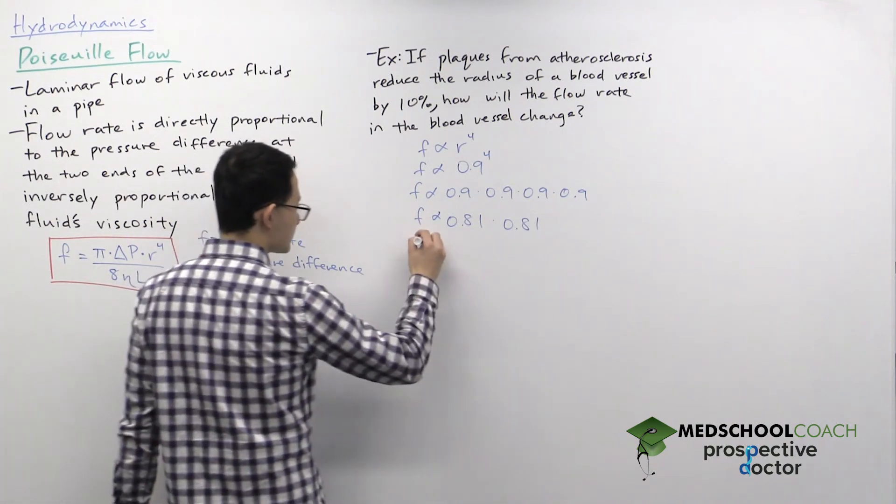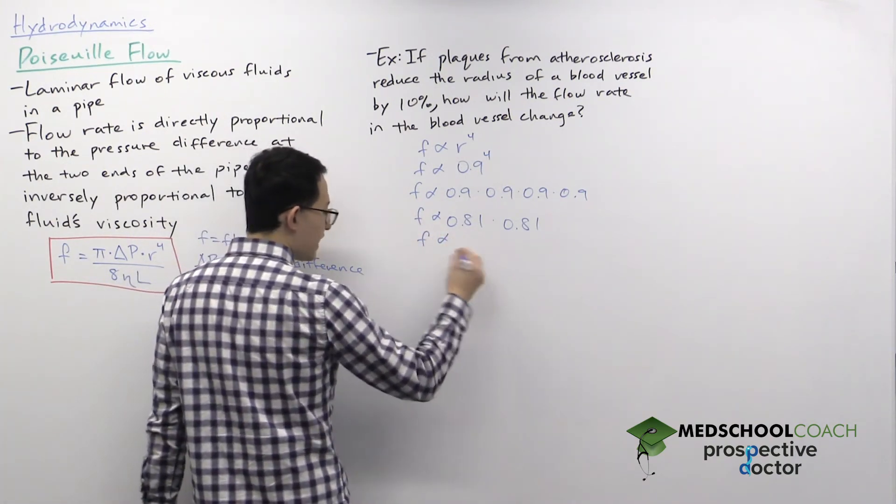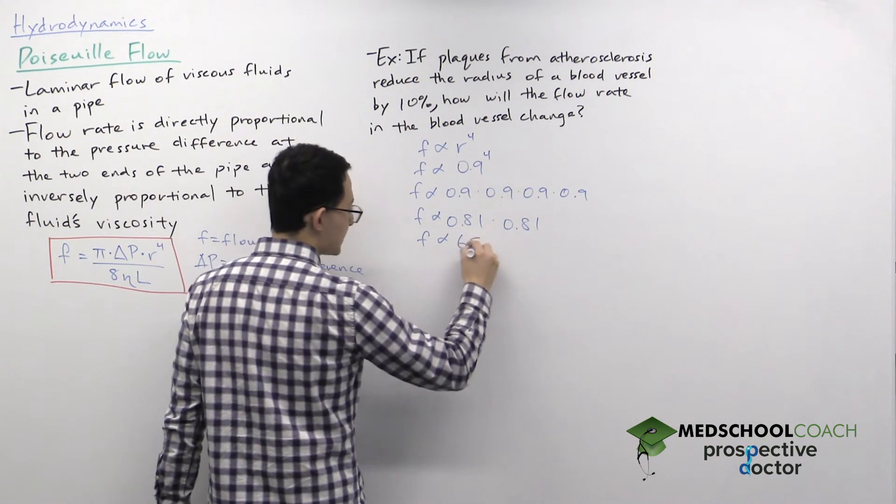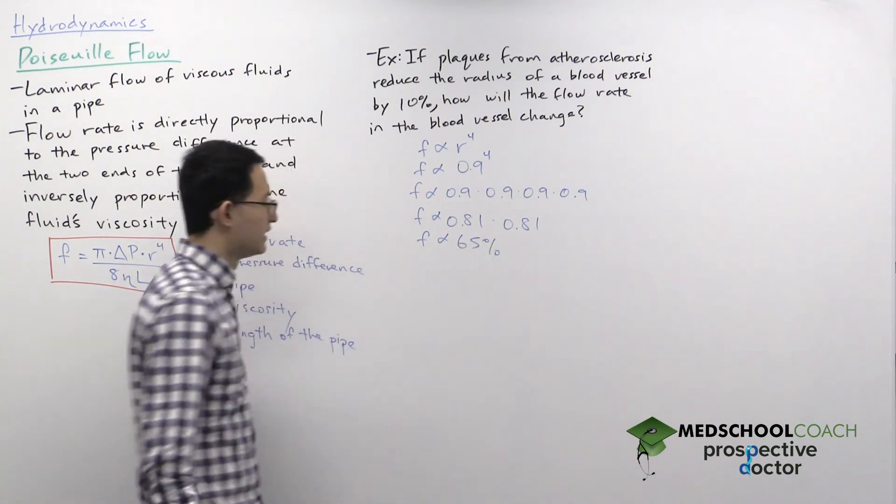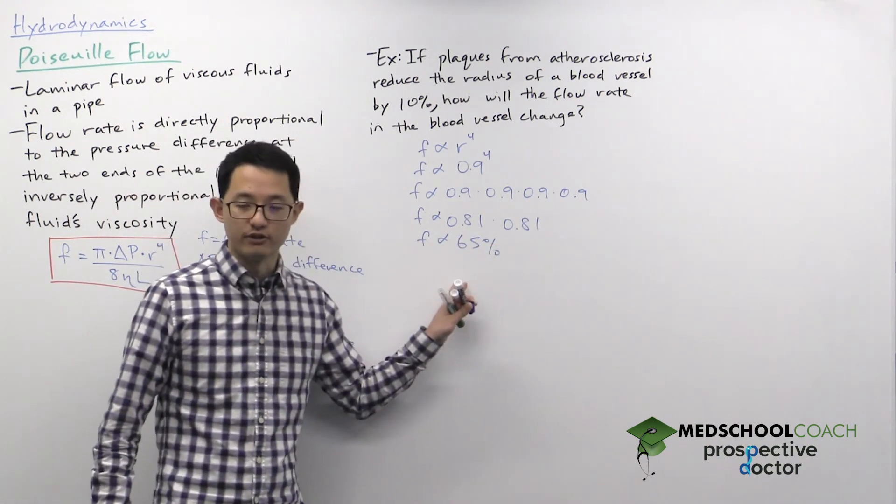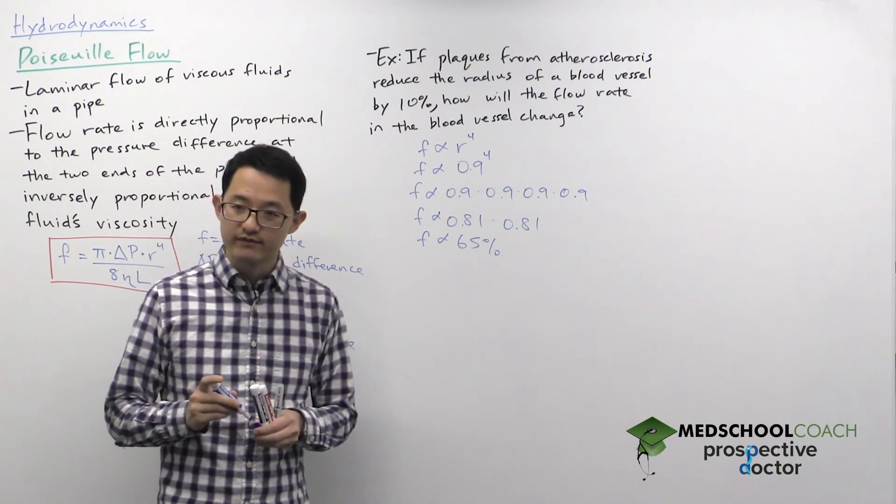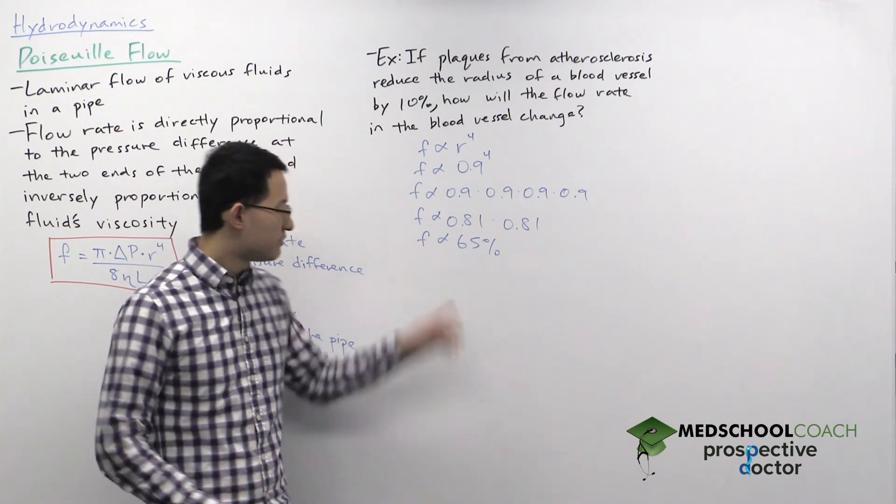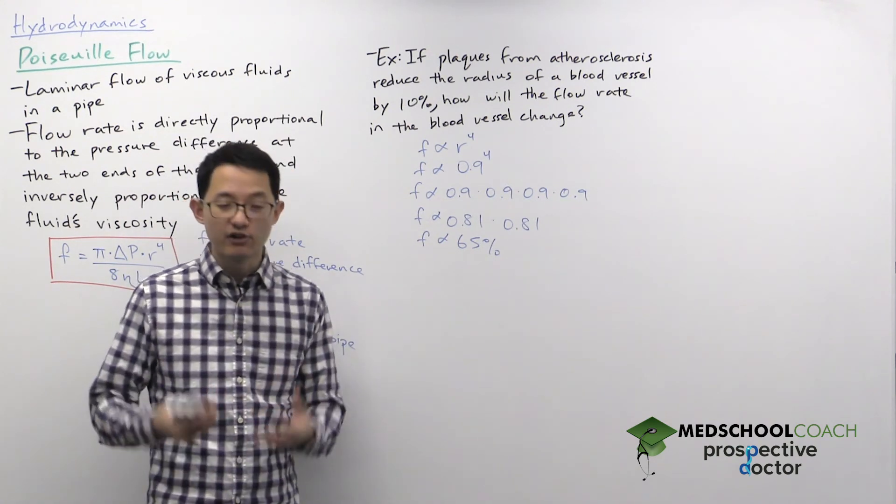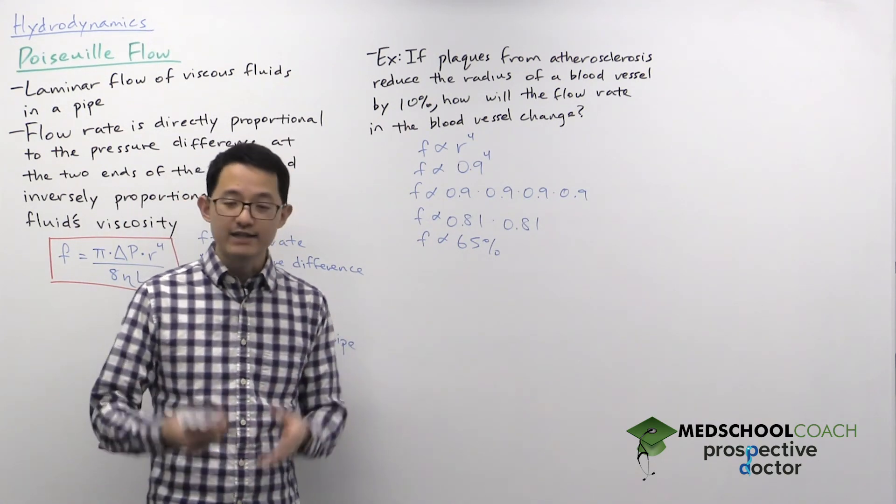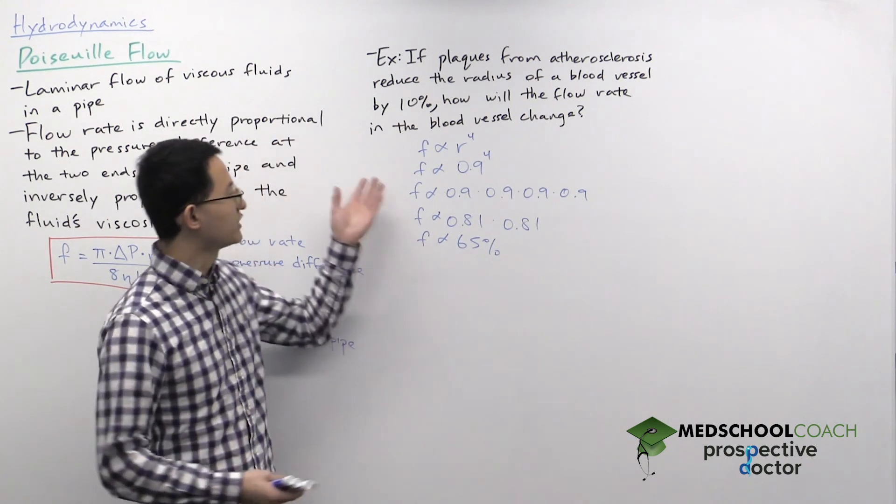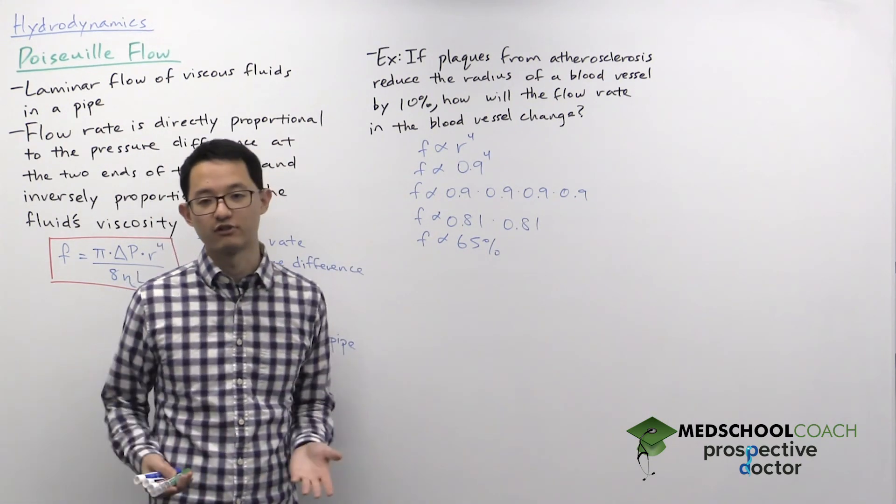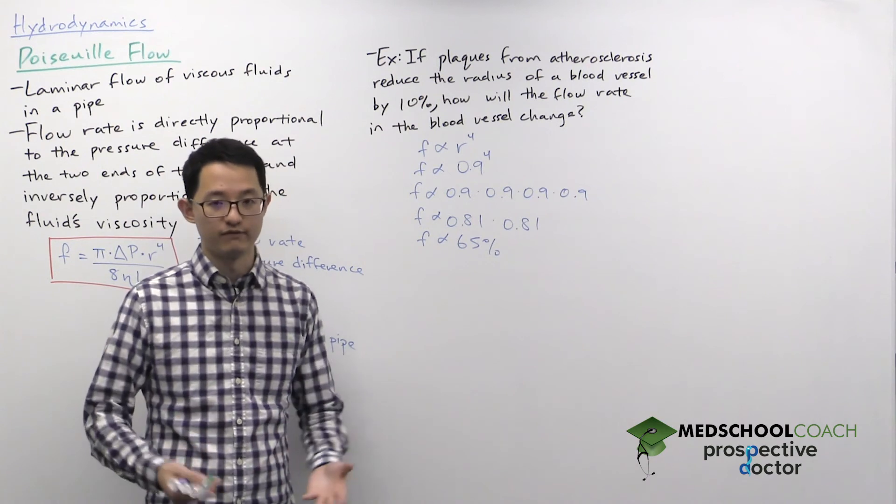That means the flow rate is now about 65%, 0.65 of its original value. This is actually a significant difference. You only decrease the radius by 10%, but your flow rate dropped by 35%. That's a very large change and really shows the impacts of atherosclerosis from a health point of view.